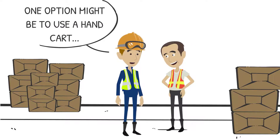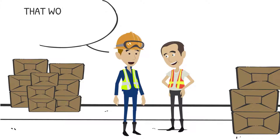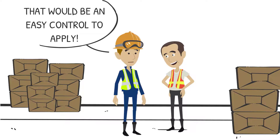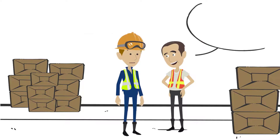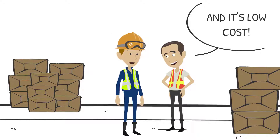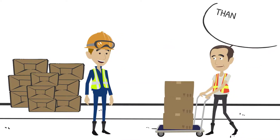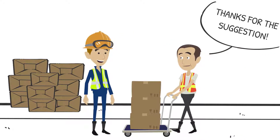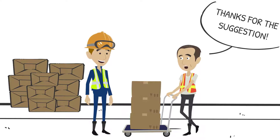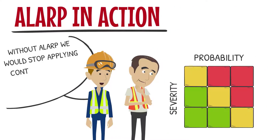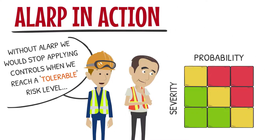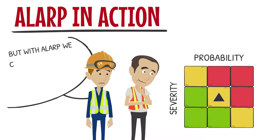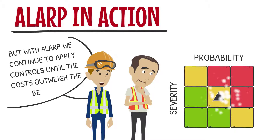One option might be to use a handcart — that would be an easy control to apply, and it's low cost. Thanks for the suggestion. Without ALARP, we would stop applying controls when we reach a tolerable risk level. But with ALARP, we continue to apply controls until the costs outweigh the benefits.